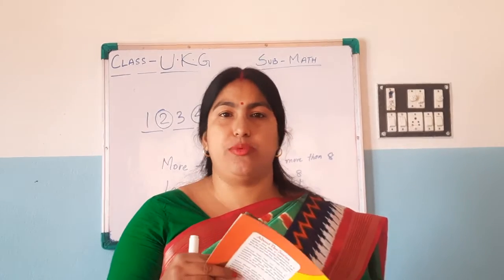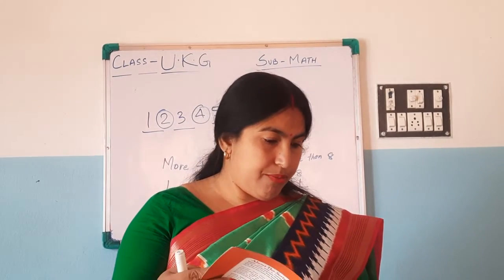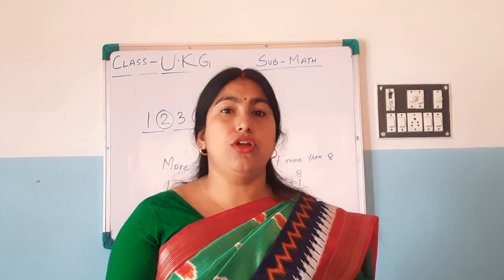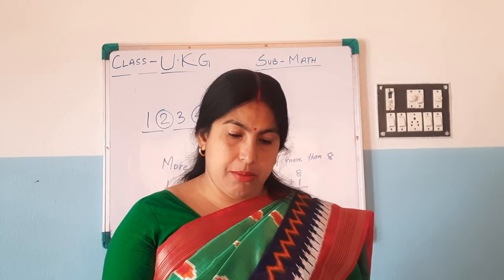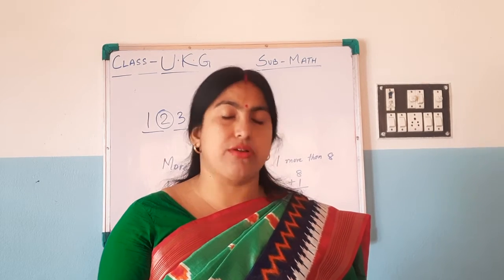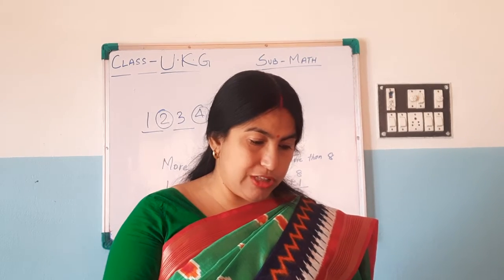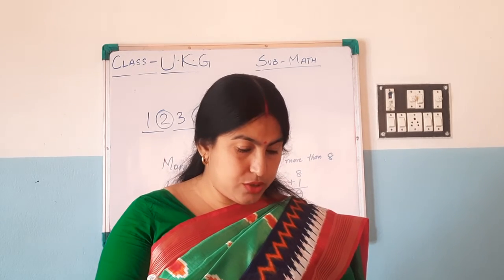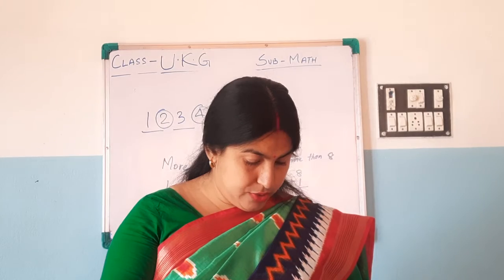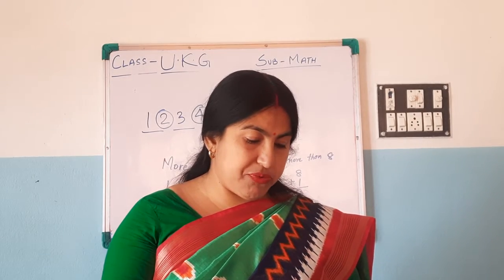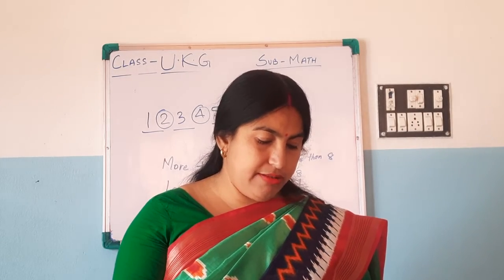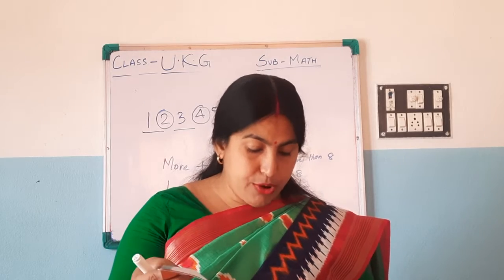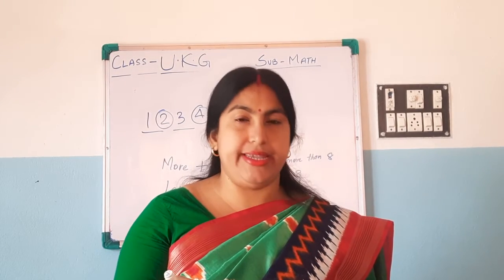Look at the picture and do it yourself. Page number 127, it's your revision work: number names, numbers, increasing order and decreasing order — you have done it before. Look at the picture. It's revision work, just do it. Page 128 is also revision work — what comes between, before, and after. You have to circle the smallest number and largest number. Do up to page number 128.